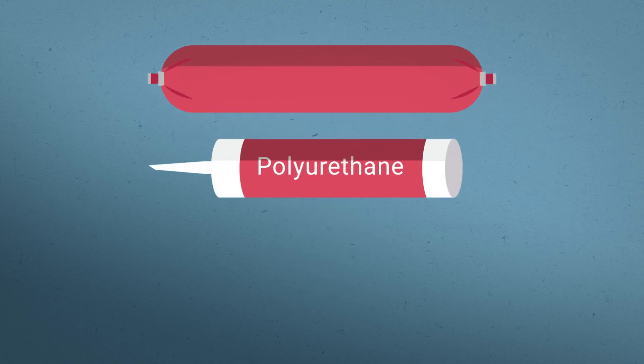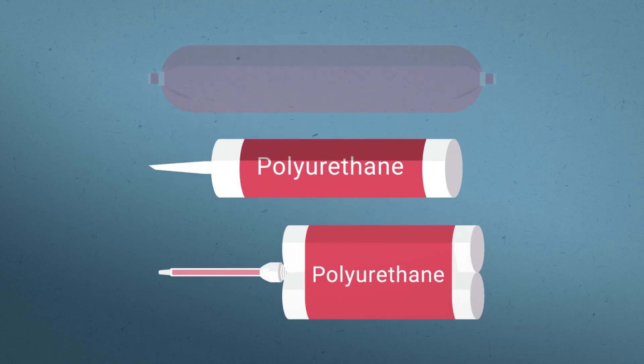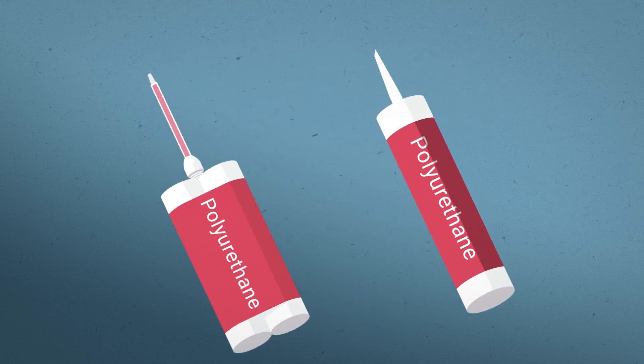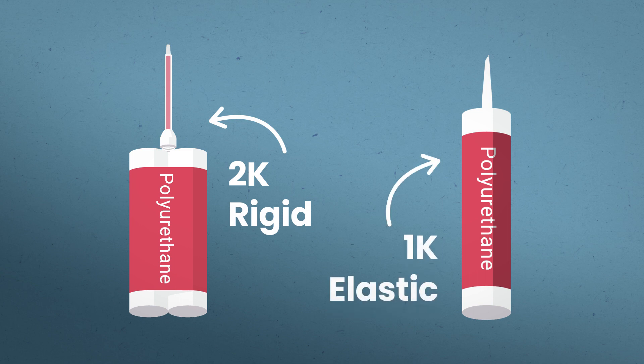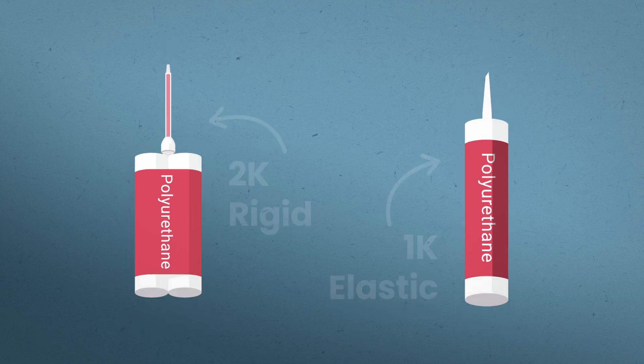For example, you can find two-component polyurethane adhesives that have very high strength and rigidity. You can also get single-component sealants that are elastic and easy to use.